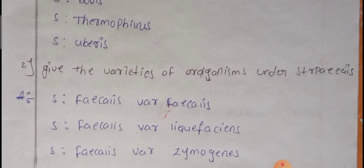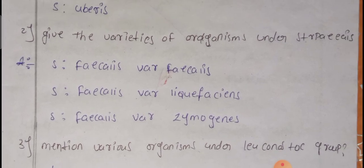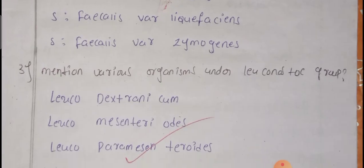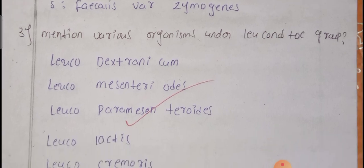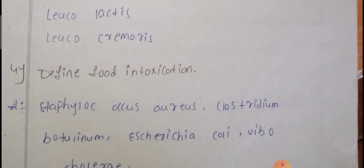Next, give the varieties of organisms under the other group. Streptococcus faecalis, Streptococcus faecalis liquefaciens, Streptococcus faecalis val, and Streptococcus gymo. Under the Leuconostoc group: Leuconostoc dextranicum, Leuconostoc mesenteroides, Leuconostoc paramesenteroides, Leuconostoc lactis, and Leuconostoc similes. Define food intoxication.